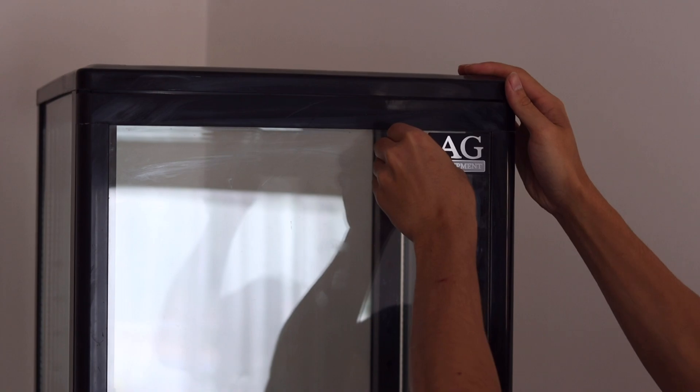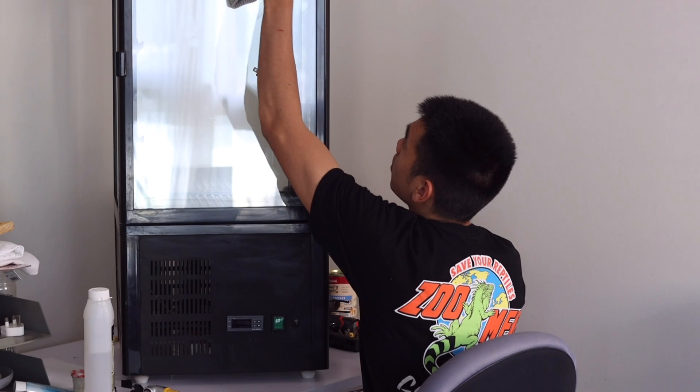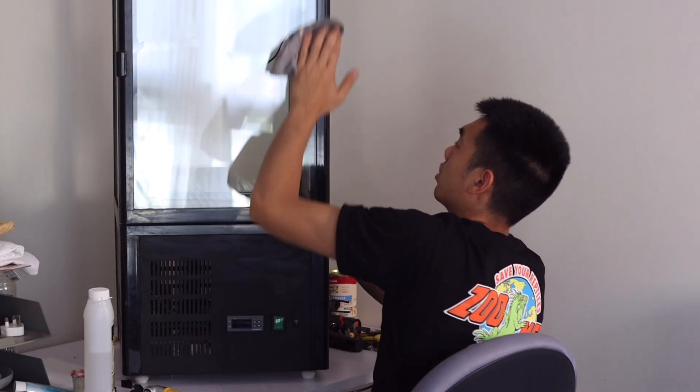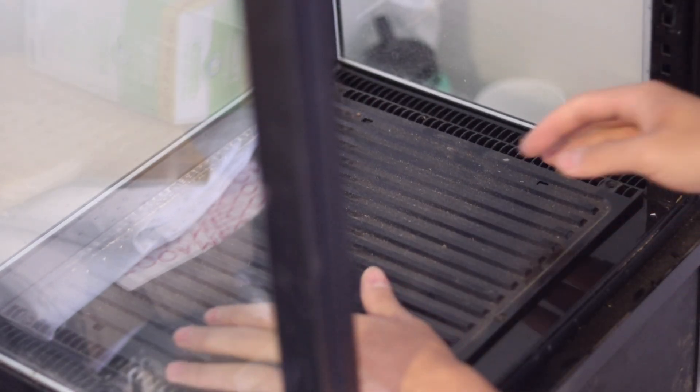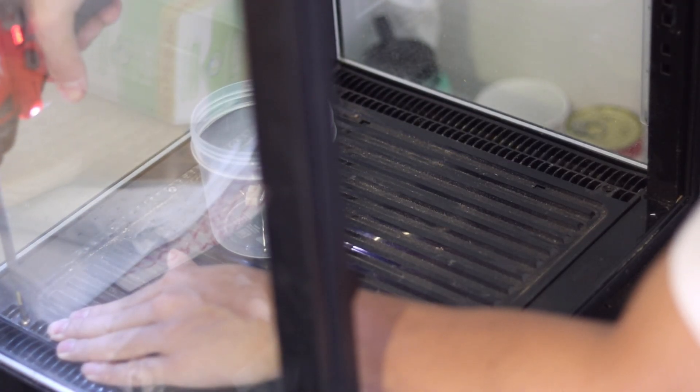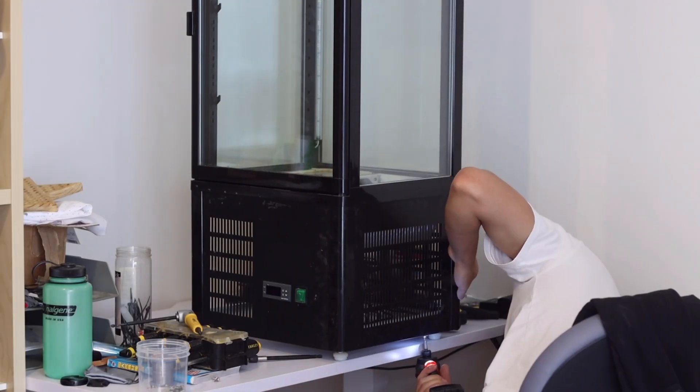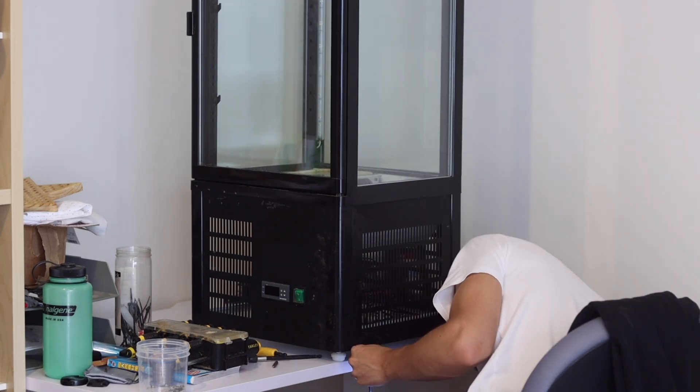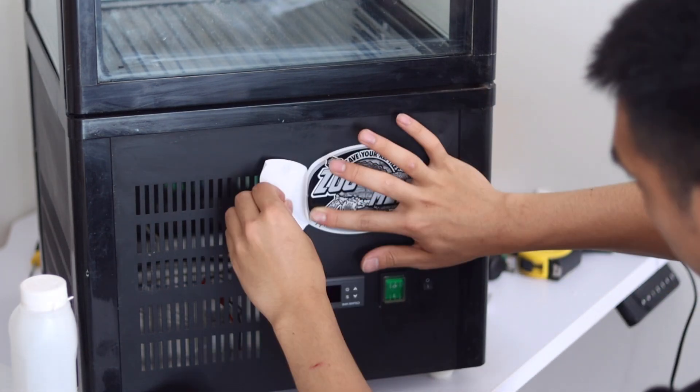To complete the conversion, I removed the fridge labels and cleaned the unit up. I also decided to add a reptile-related sticker to make this look a little more like an incubator than a fridge.